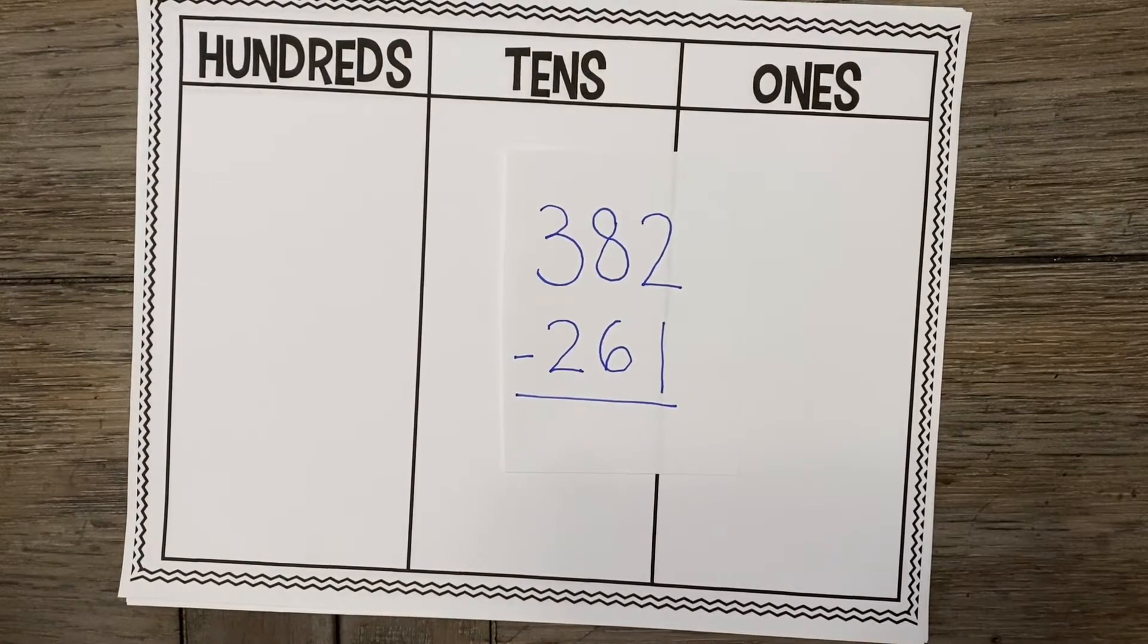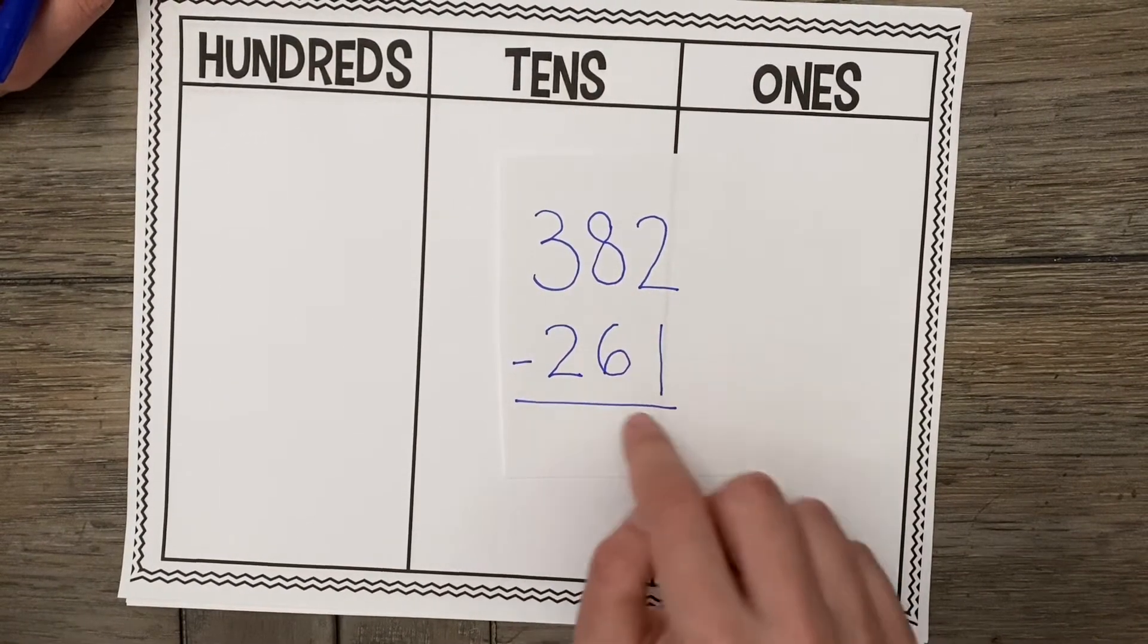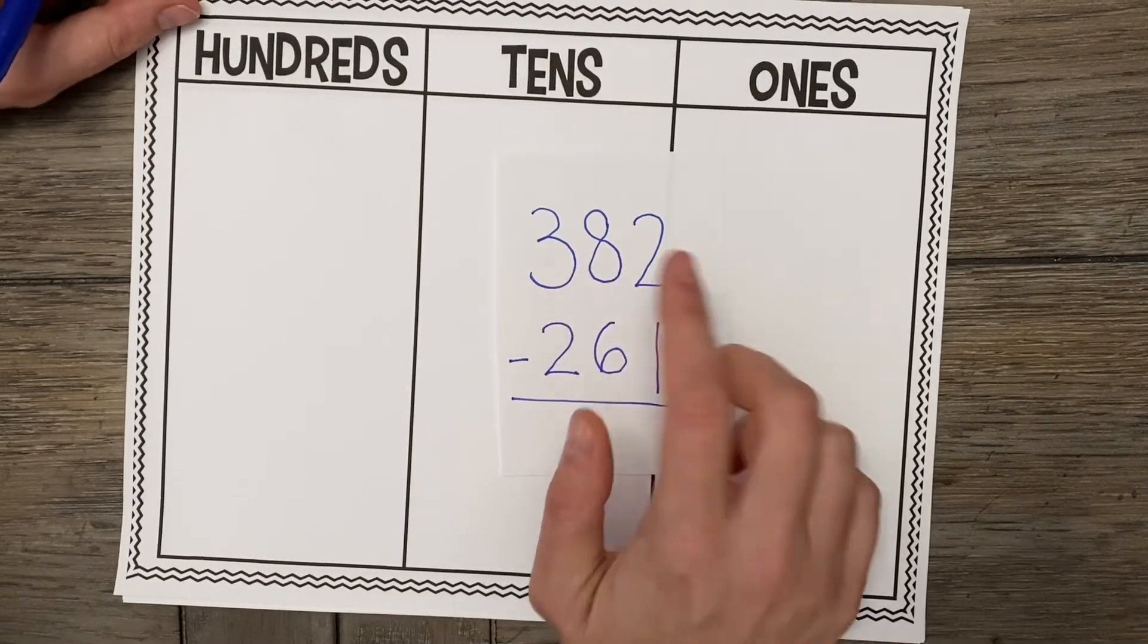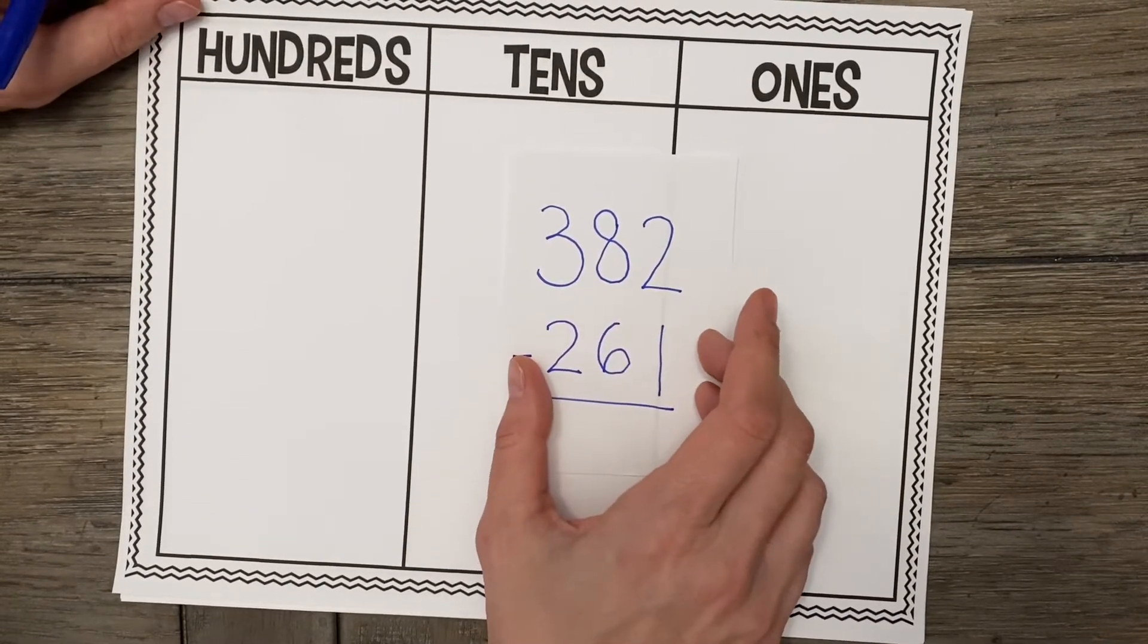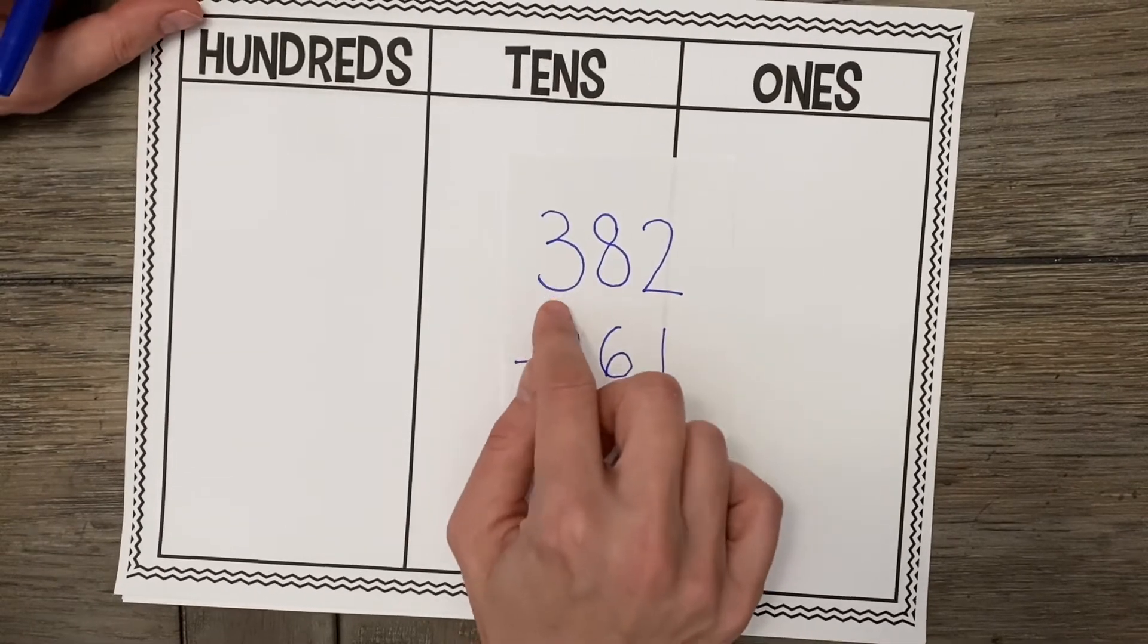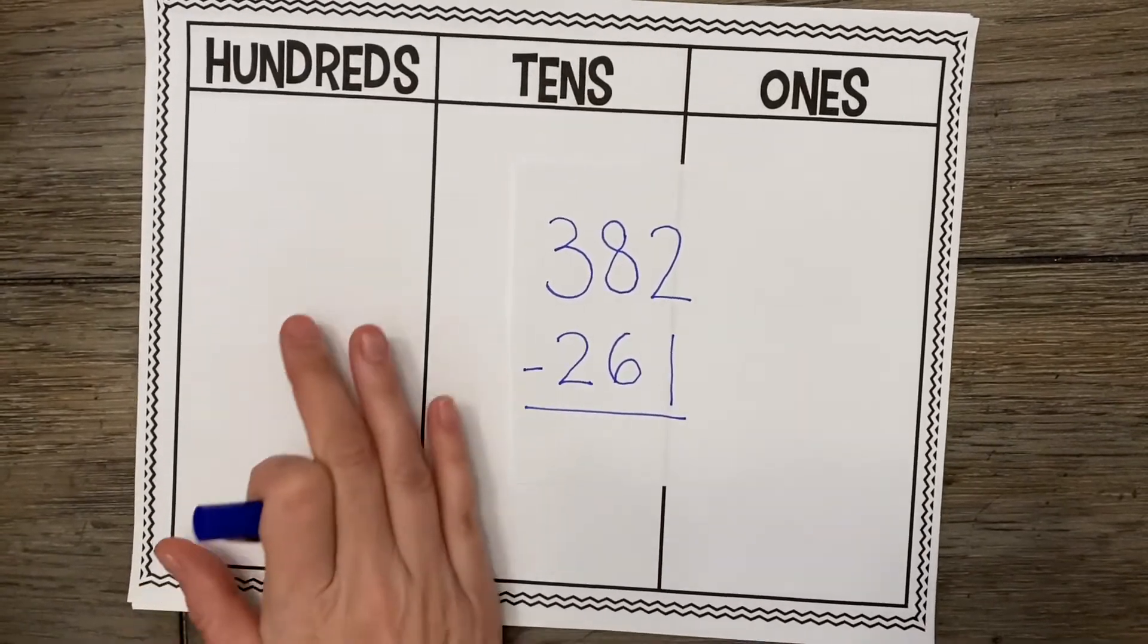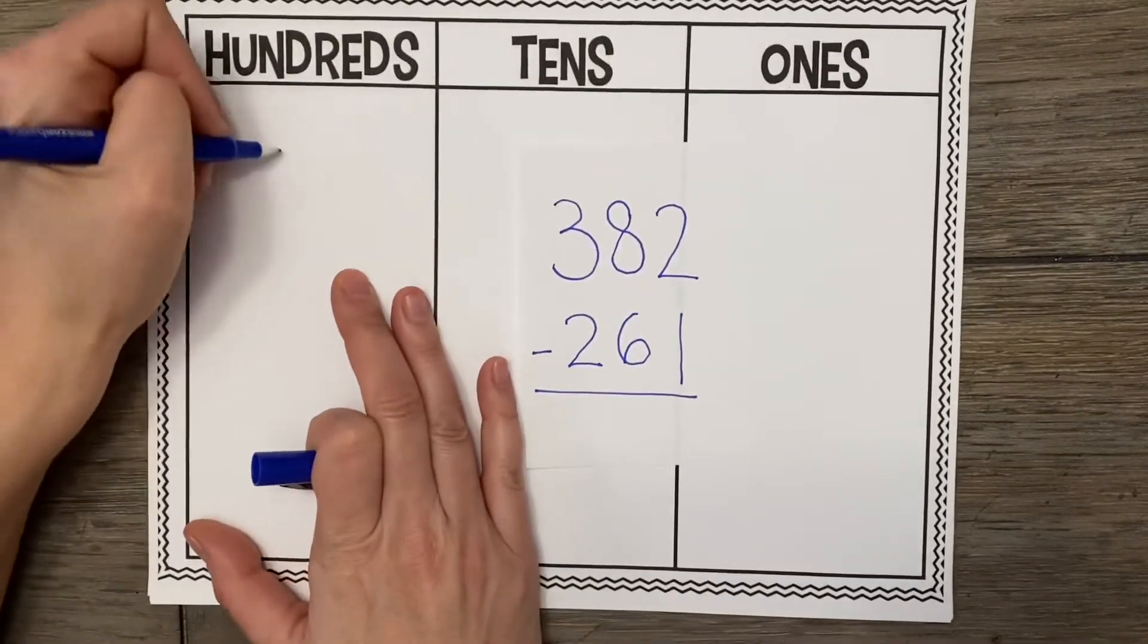So let's go ahead and remember that we are only going to draw out our top number because we are not adding to that number, we are taking away from it. So let's go ahead and draw 382 using our base 10 blocks. So I'm going to start with my 3. My 3 is going to be represented with 3 hundred squares. So I'm going to go ahead and do that now.